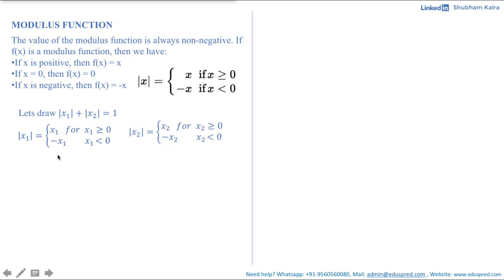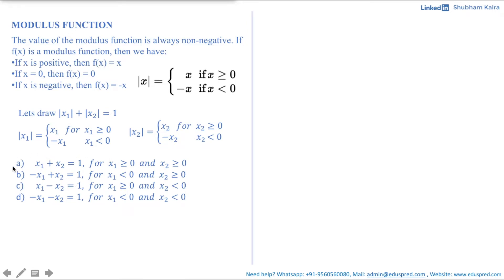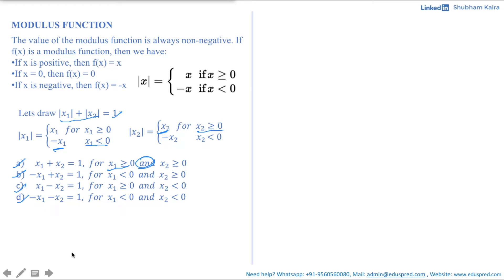Combining the four cases for x1 and x2 gives four equations. For x1 ≥ 0 and x2 ≥ 0: x1 + x2 = 1. For x1 < 0 and x2 ≥ 0: −x1 + x2 = 1. And likewise for the remaining two quadrants. The conditions x1 = 0 and x2 = 0 split the Cartesian plane into four standard quadrants, which is the basis for plotting the graph.